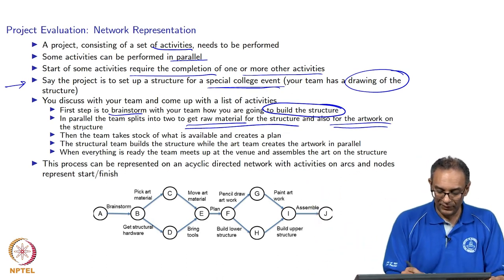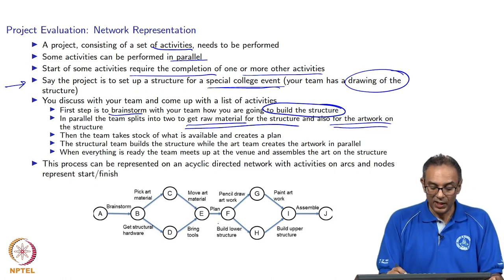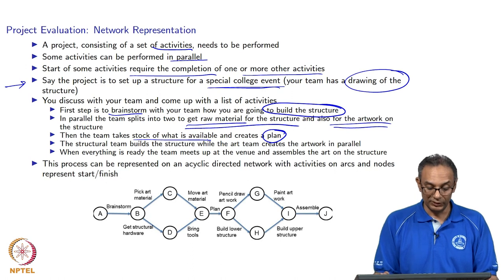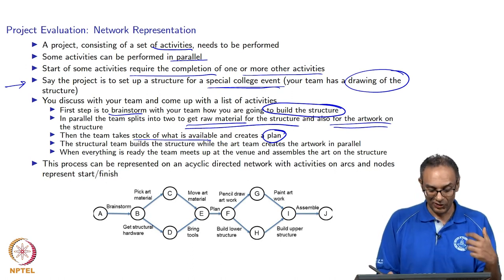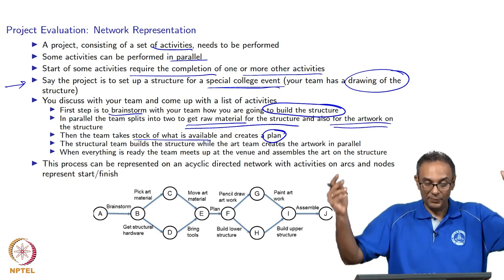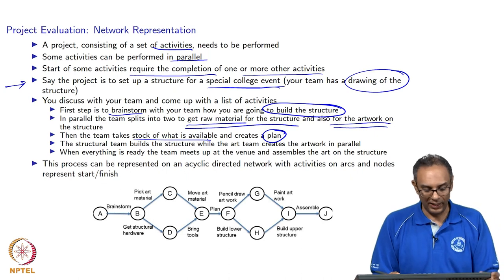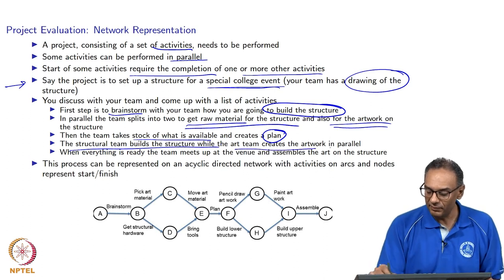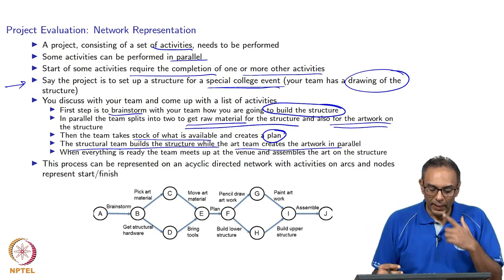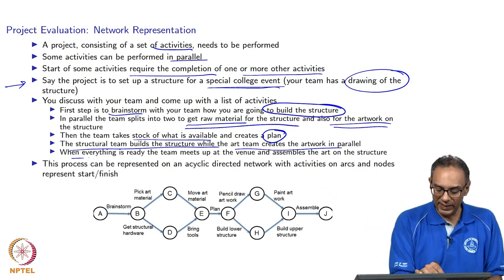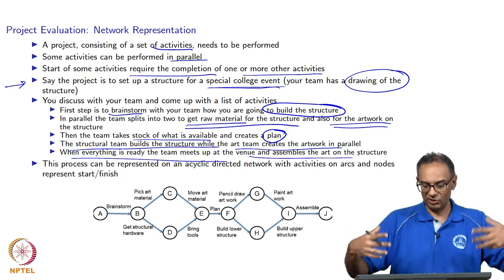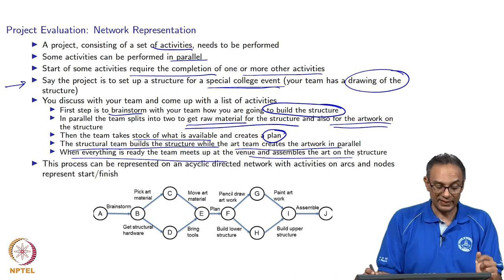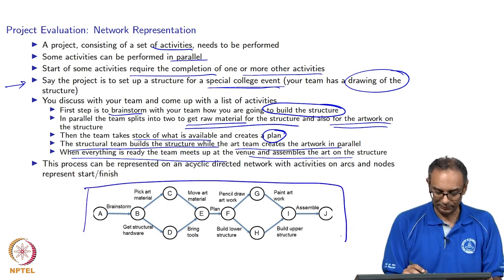Once both the art and structural materials are gathered, you sit down and plan, taking stock of what is available — because many times you can only plan after figuring out what you have. The structural team then builds the structure while the art team creates artwork in parallel, then puts it on the structure. Once everything is ready, you go to the venue and assemble the art on the structure. Everything I just described can be put down in network form.